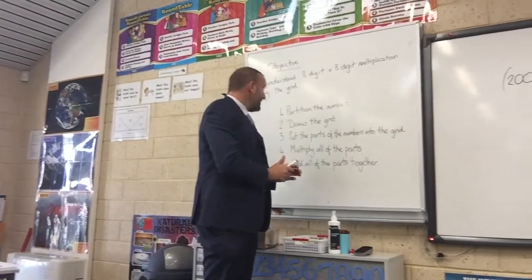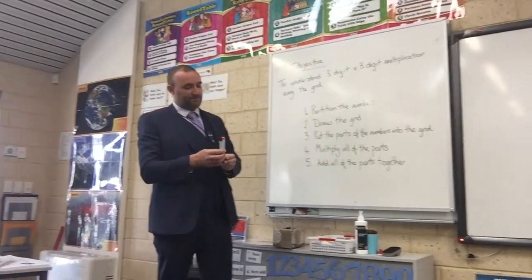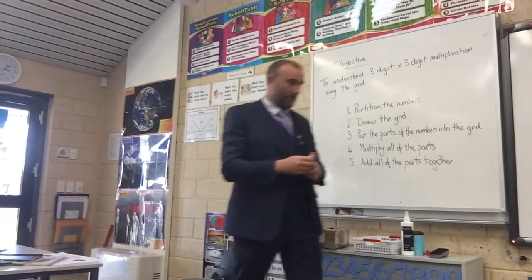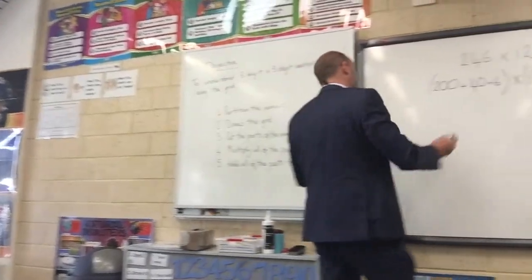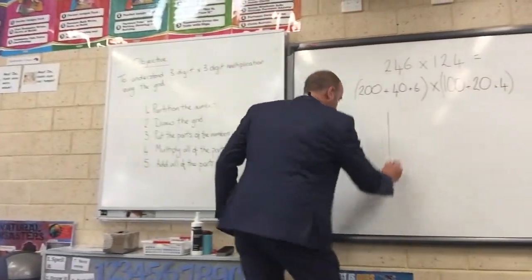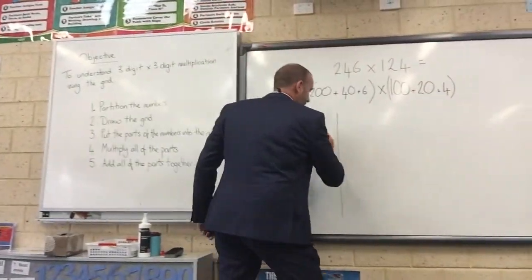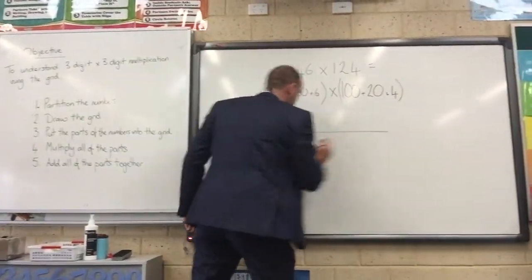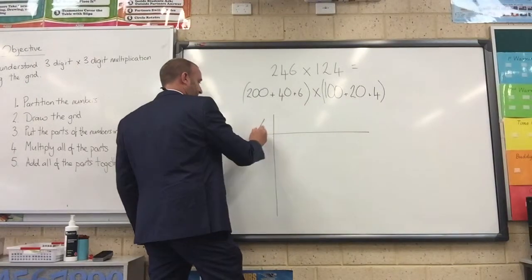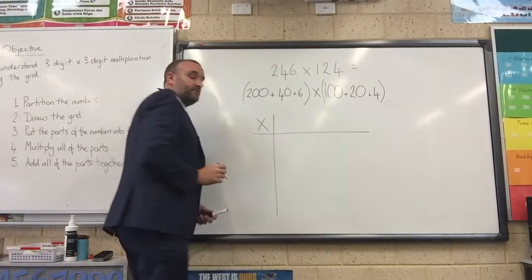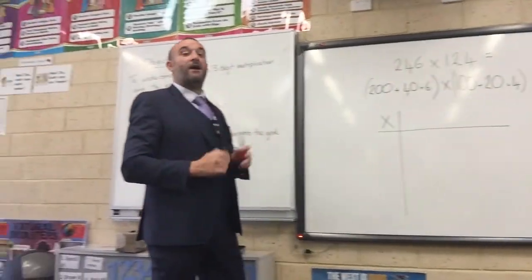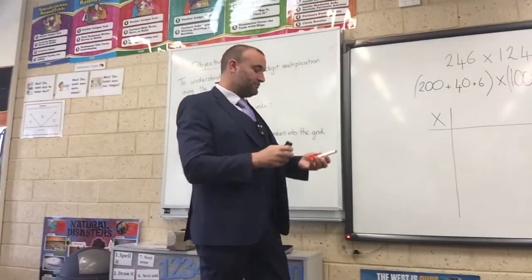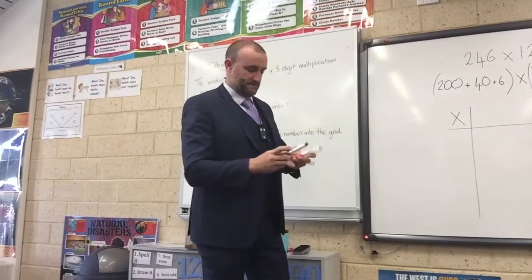Welcome back to our second step, which is the nice easy one. We're going to draw our grid — one line going down, one line going across — and we put the multiply sign in so we don't forget what operation we're doing. Pause your video and draw your grid.